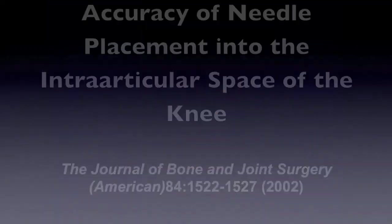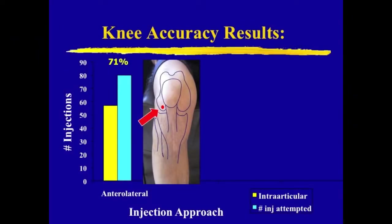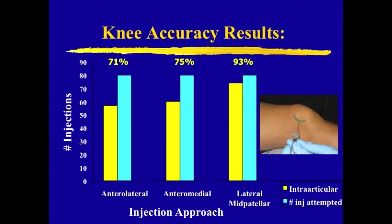We can see the lower accuracy of the anterior approach in this study that compared three positions. In the seated anterolateral approach, the orthopedist only successfully injected the knee joint 71% of the time. Similarly, in the seated anteromedial position, he successfully reached the knee joint 75% of the time. However, in the supine lateral midpatellar approach, he successfully injected the knee joint 93% of the time.